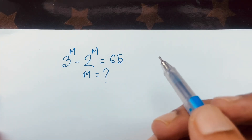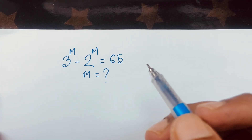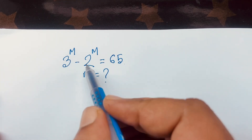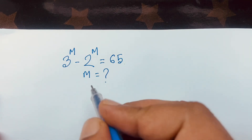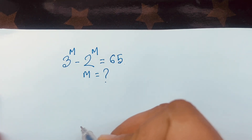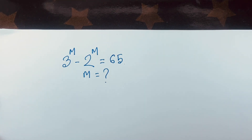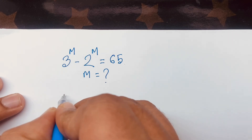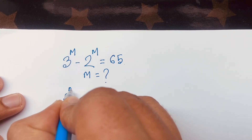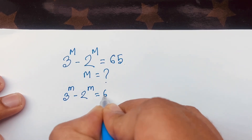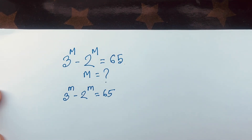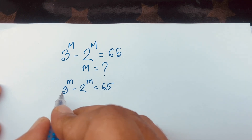Hello everyone. In this video we'll solve this interesting math question: 3 to the power m minus 2 to the power m is equal to 65, and we'll find out what is the value of m in this math question.